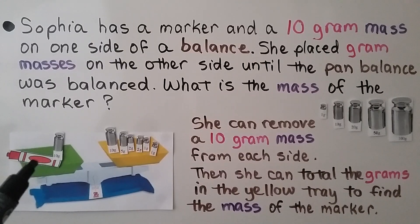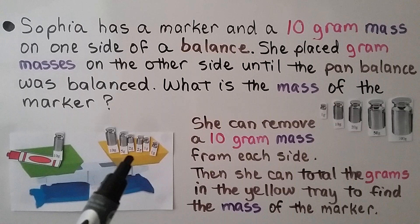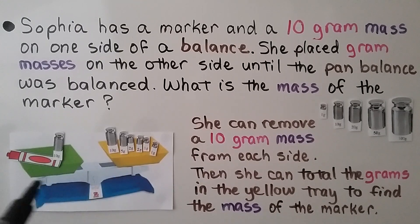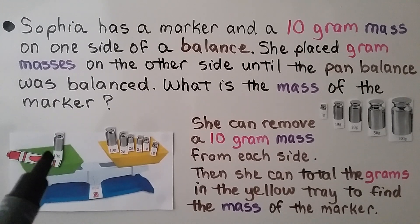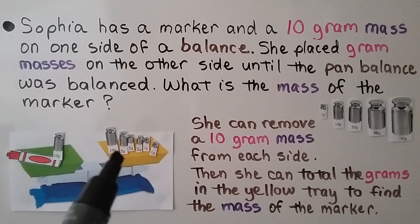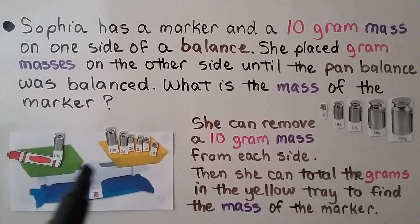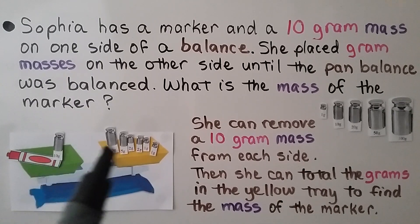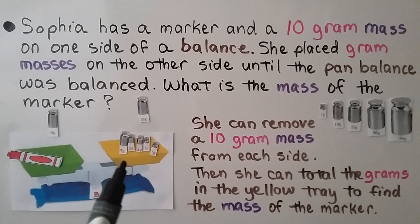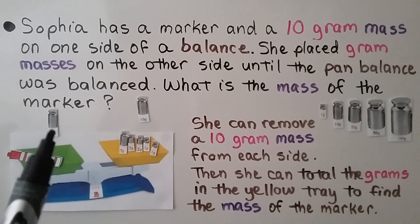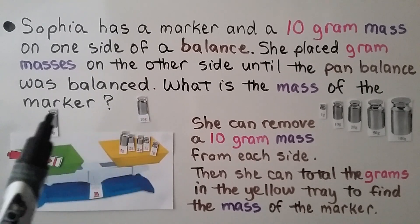Sophia has a marker and a 10-gram mass on one side of a balance. She placed gram masses on the other side until the pan balance was balanced. What is the mass of the marker? We can see there's a marker and a 10-gram mass on one side, and on the other side we have a 10-gram, a 5-gram, a 2-gram, another 2-gram, a 1-gram, and a 1-gram. She can remove a 10-gram mass from each side since both sides have one, and the pan will still stay balanced.